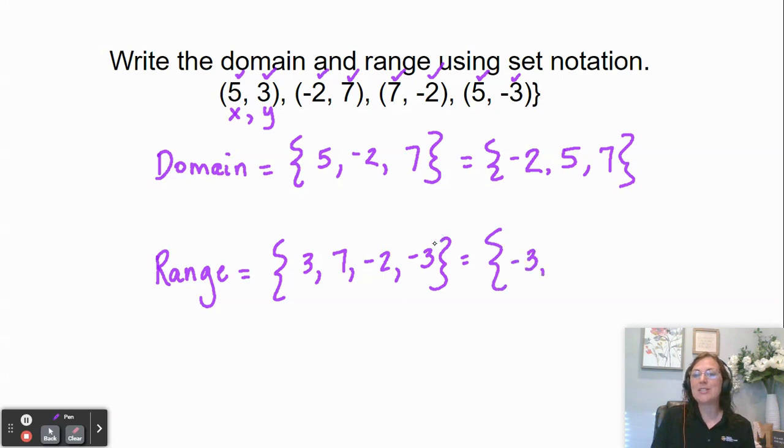So we'll put -3, -2, then 3 and 7. So this is how you take a set of ordered pairs and you write out your domain with your x values, use those curly braces for set notation, and then your range, the y values, and again use those curly braces. All right friends, I hope this helps. Have a great week.